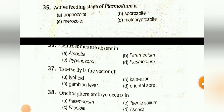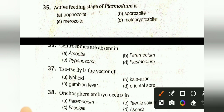The active feeding stage of Plasmodium is: trophozoite, sporozoite, merozoite, or metacryptozoite. The answer is A, trophozoite.